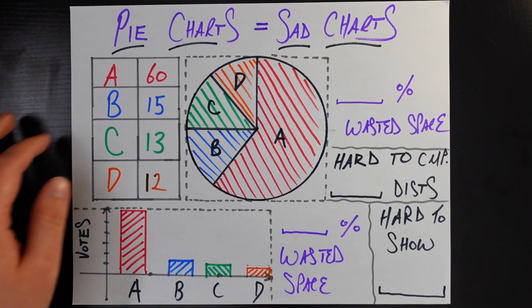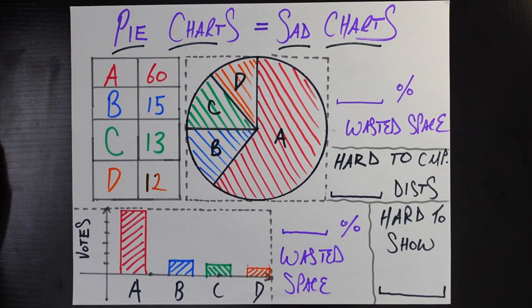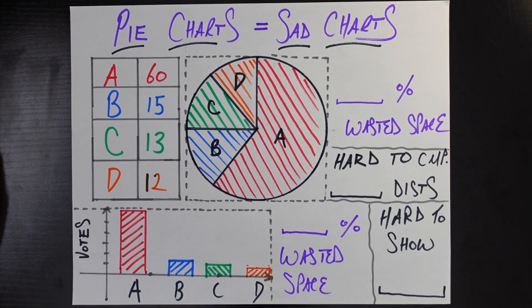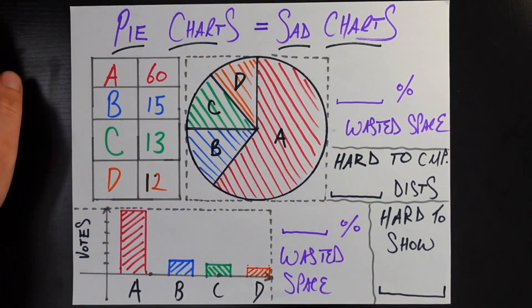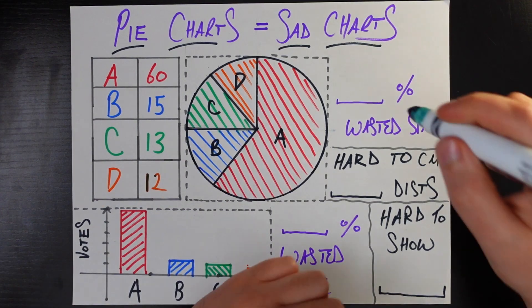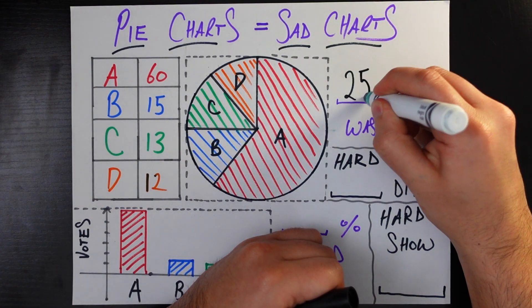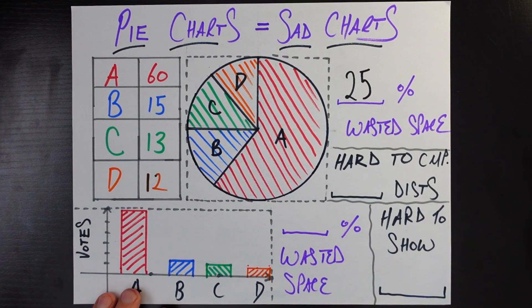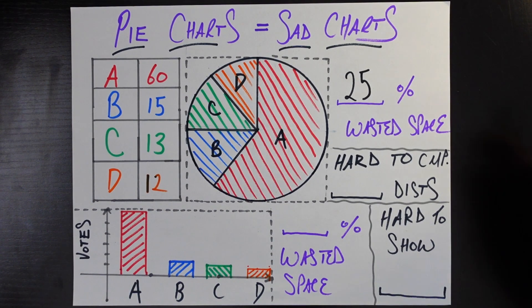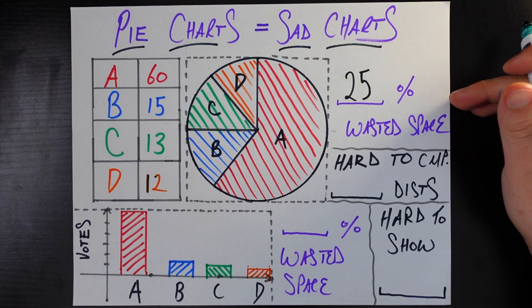You can get that pretty easily as the area of the circle divided by the area of the square, and pi being about three. If you divide three by four, 75 percent of this gray box is used space, used by the pie chart, which means that about 25 percent of any pie chart's footprint is just wasted space. I think that is enough to disqualify pie charts in the first place.